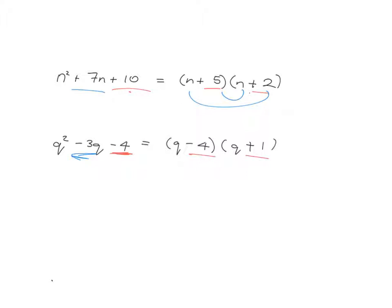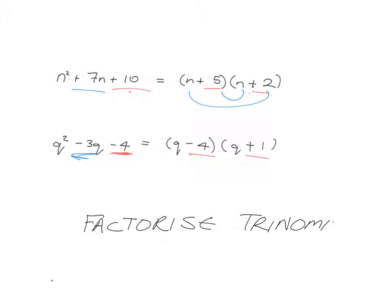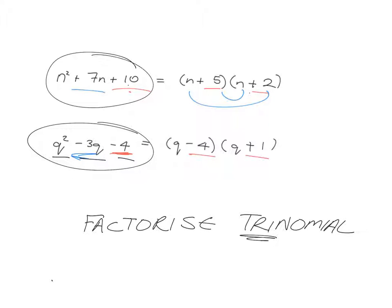So this process of going from the expanded form back to the brackets is called factorizing. And just to give us all the words here, we're going to be factorizing trinomials. What's a trinomial? Well, tri, like in triangle, means 3. So these things here are trinomials because they've got one, two, three terms. Here's another trinomial because it's got one, two, three terms. And factorizing the trinomial means breaking it down into two things that are multiplied together to give you it.